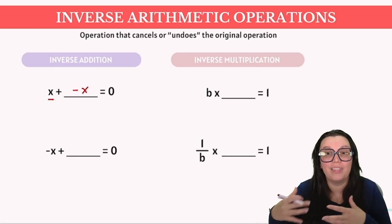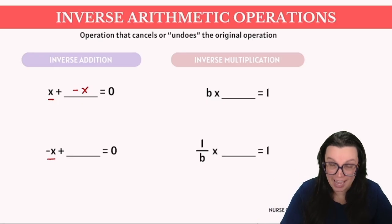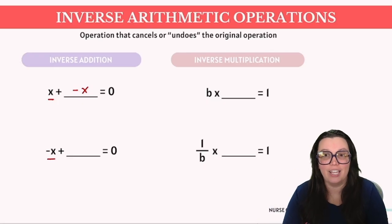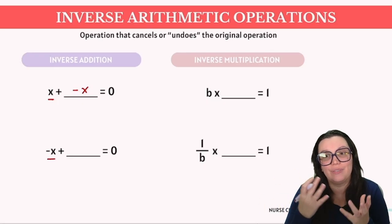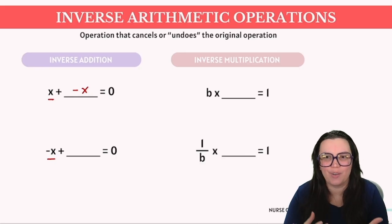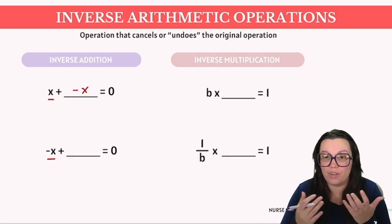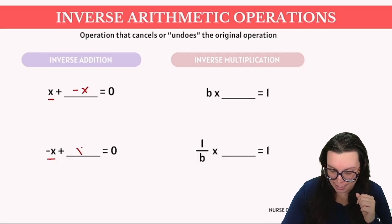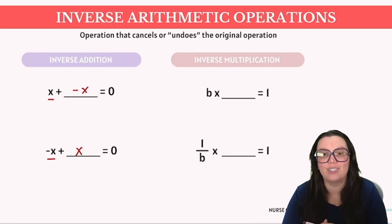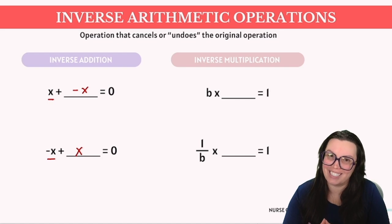In our next example we're dealing with a negative value, negative x. To find what needs to be added to achieve zero, we use that additive inverse concept, meaning that we need to add the opposite. So negative x plus positive x is going to equal zero, demonstrating the inverse property of addition.